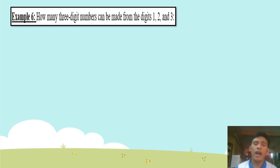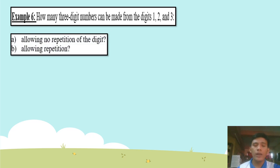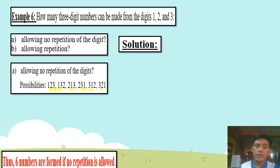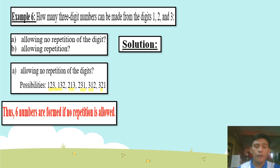Example number 6: how many three-digit numbers can be made from the digits 1, 2, and 3? For A, allowing no repetition of the digits. The possibilities are: 123, 132, 213, 231, 312, 321. Therefore, 6 numbers are formed if no repetition is allowed.